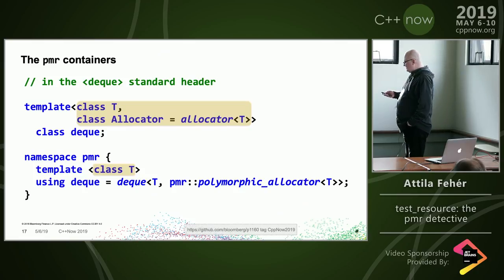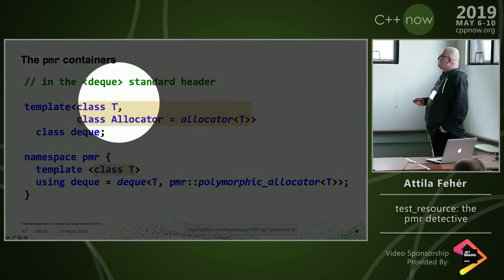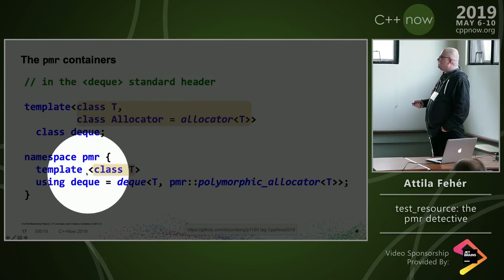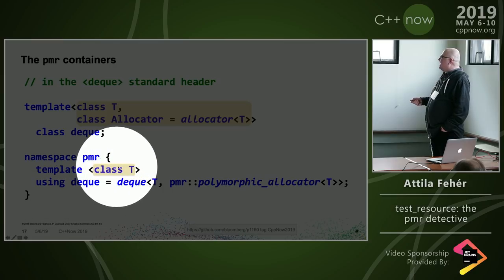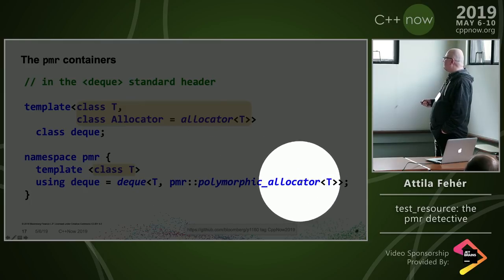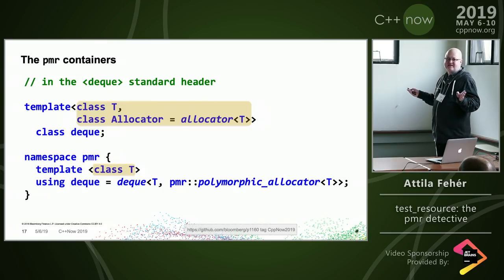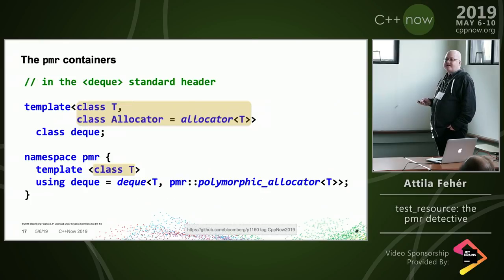PMR containers in the pmr namespace are simply alias templates: a normal container has two template parameters — the stored type and the allocator — but the PMR version has only one parameter, the allocator being baked in as polymorphic_allocator<T>. We didn't change vector or deque; we just stuck in the other allocator.